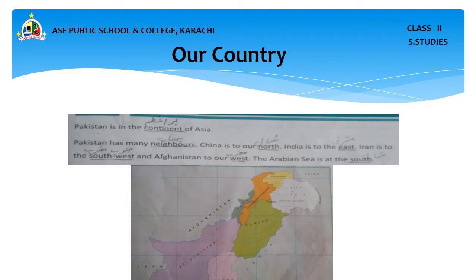China is to our north. India is to the east. Iran is to the south-west. Afghanistan is to our west. The Arabian Sea is at the south. You can see these neighboring countries on the map.